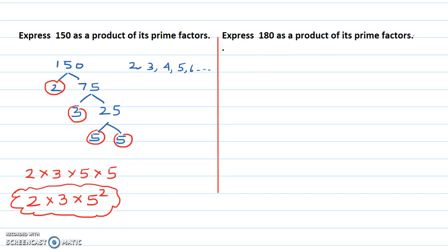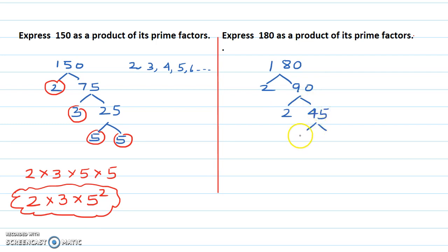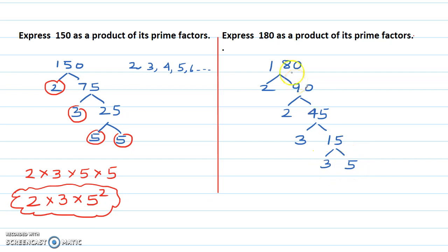Next question: 180. Start with two — half of 180 is 90. Half of 90 is 45. We can't take two into 45 because that gives a decimal, so take three. Three times 15 gives 45. Then again take three times five.